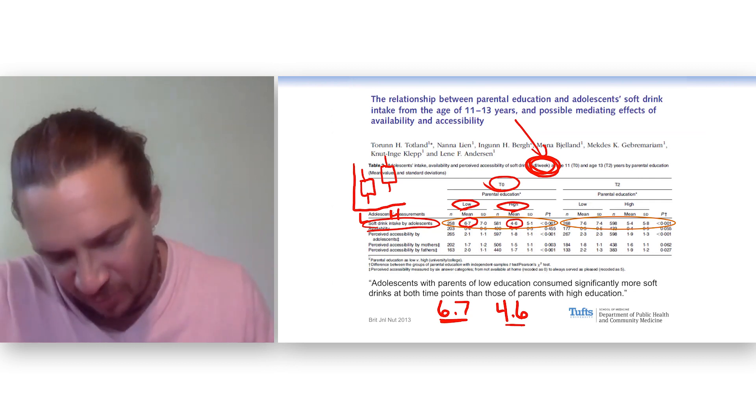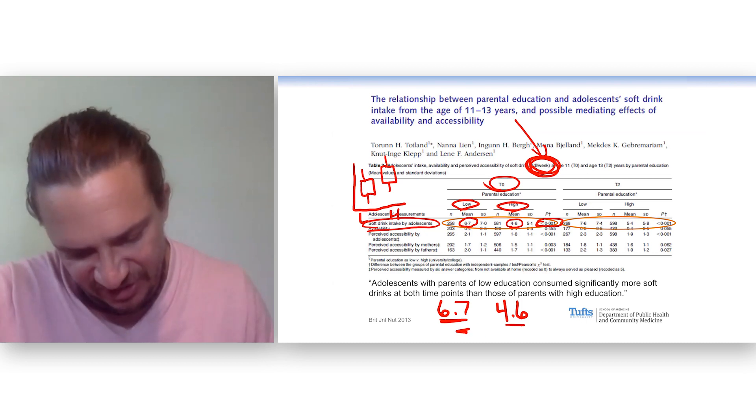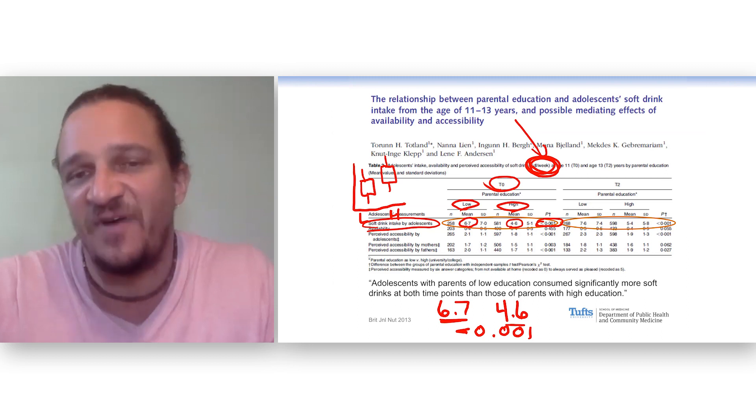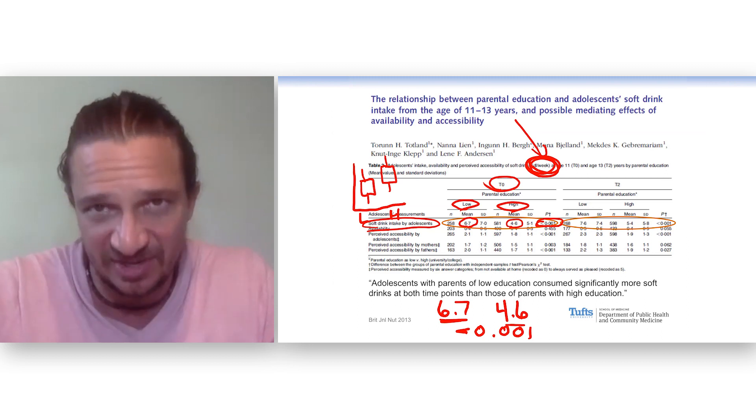So 6.7 compared to 4.6, we see the p-value is less than 0.001. So there is evidence of significantly more soft drink consumption by kids of parents with low education compared to kids with parents of high education. Statistically significant.